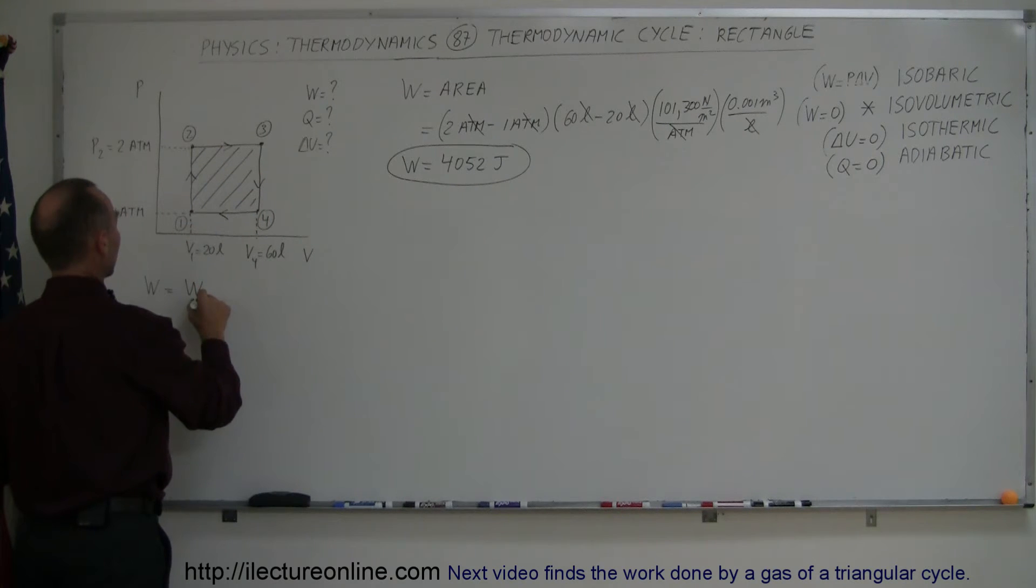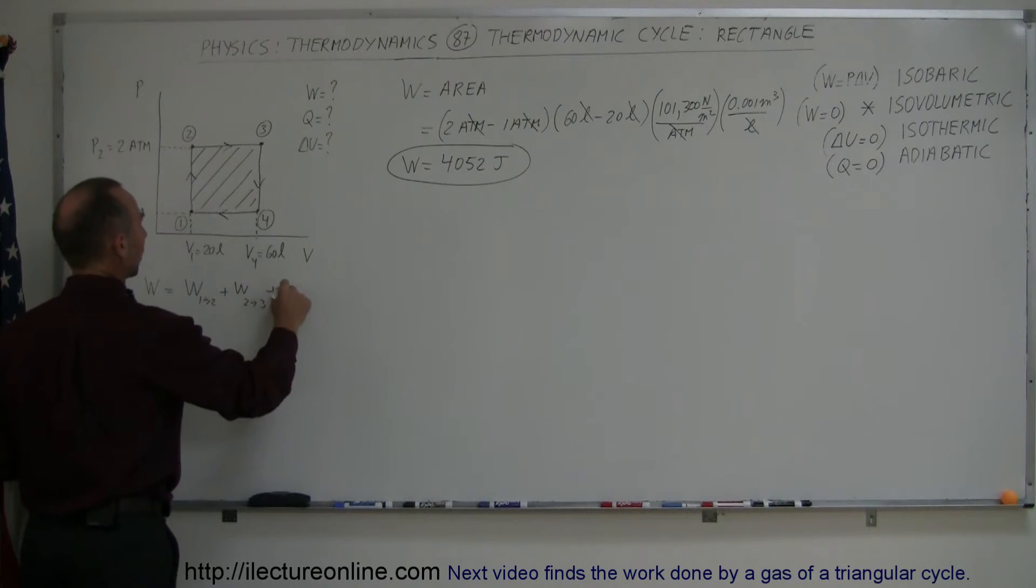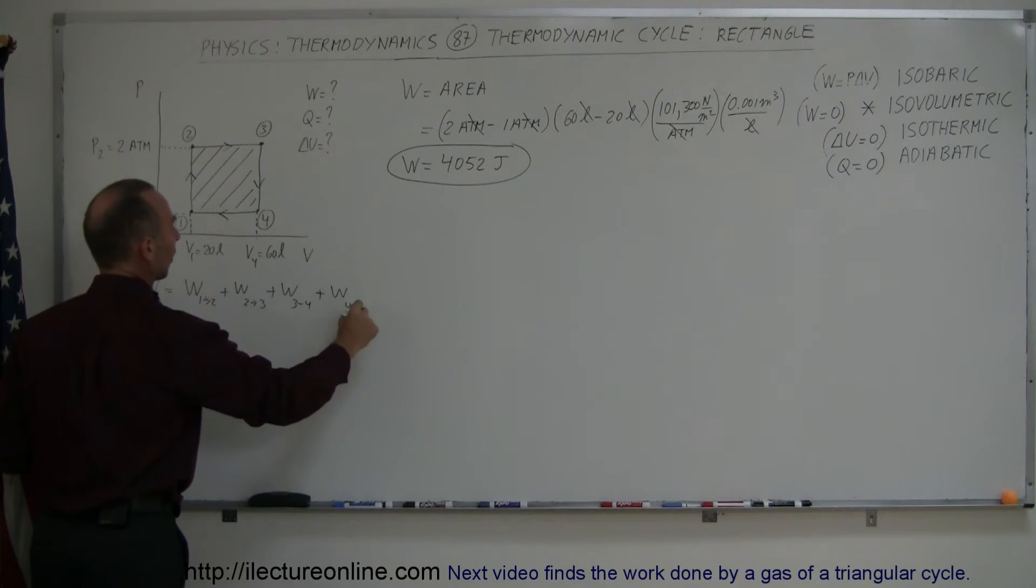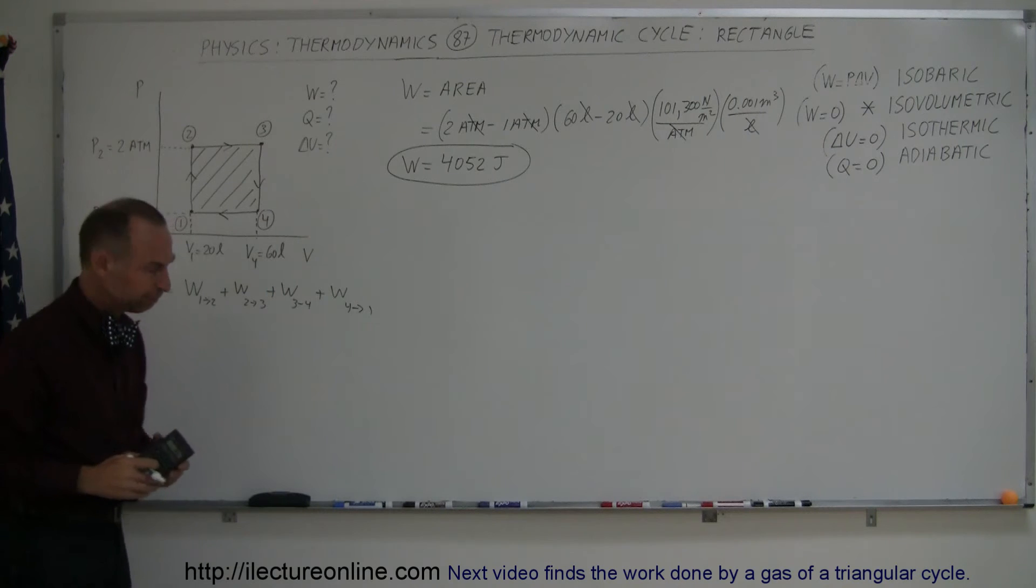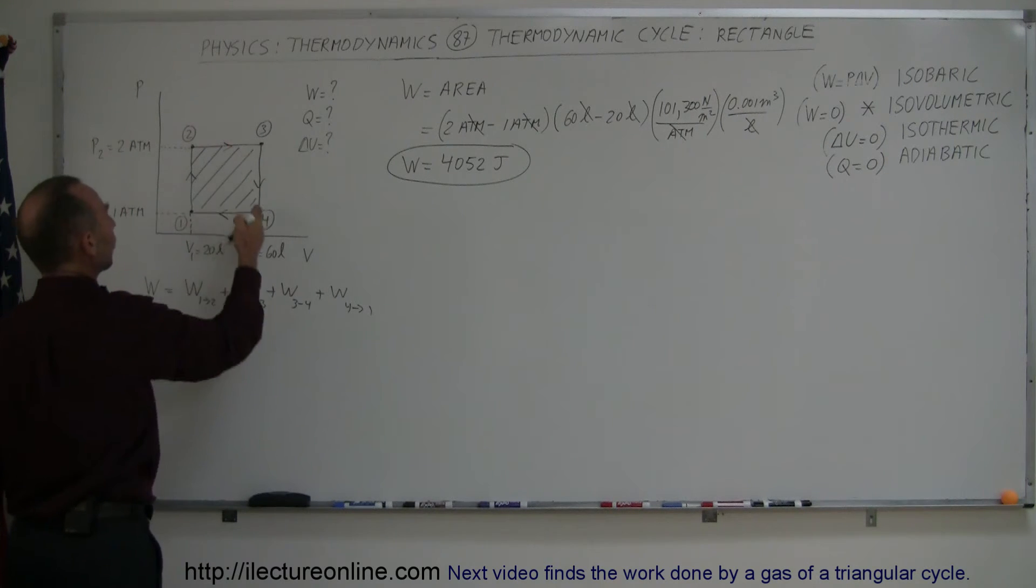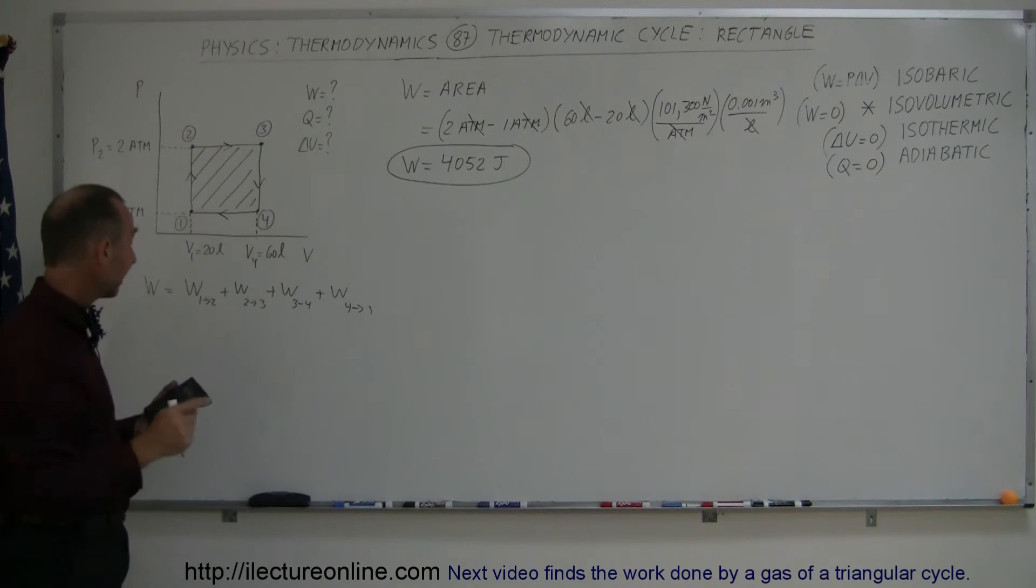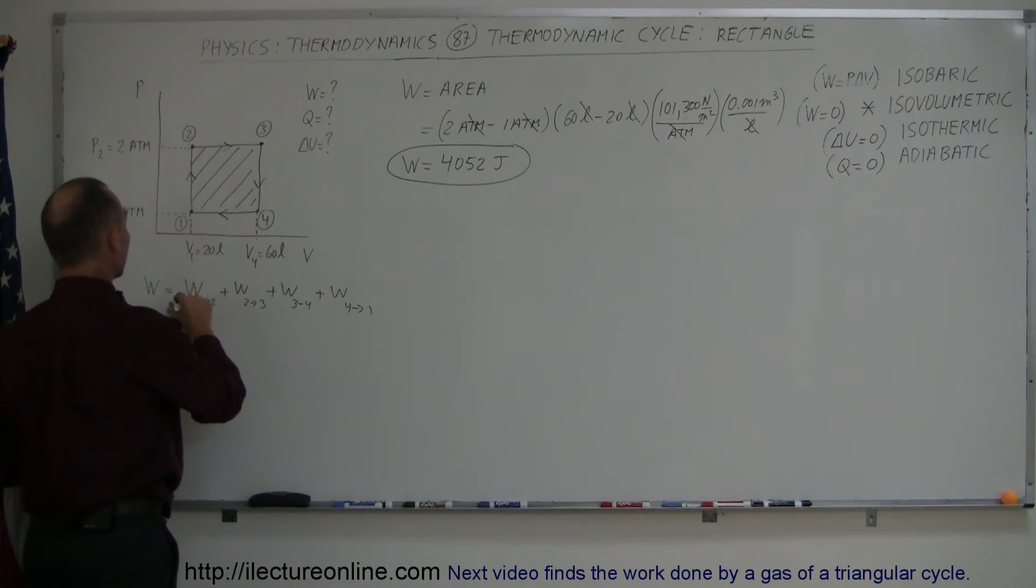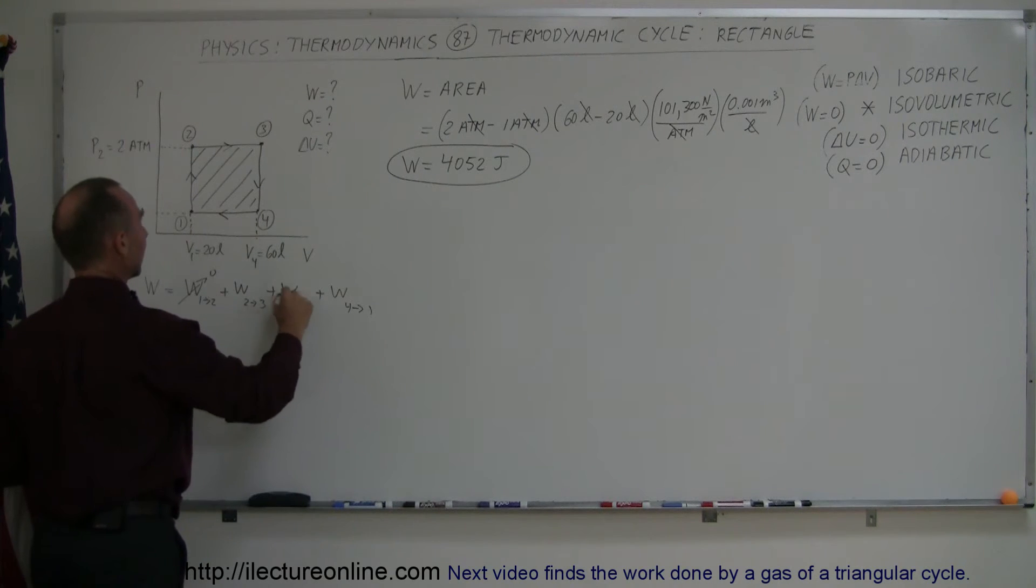So work done going from 1 to 2, plus the work done going from 2 to 3, plus the work done going from 3 to 4, plus the work done going from 4 back to 1, back to the state that we started. Now, notice that when we go from 1 to 2 and from 3 to 4, the volume doesn't change. So in that case, those two go to 0. So this is 0, and this one is 0, which means we only have those two left.